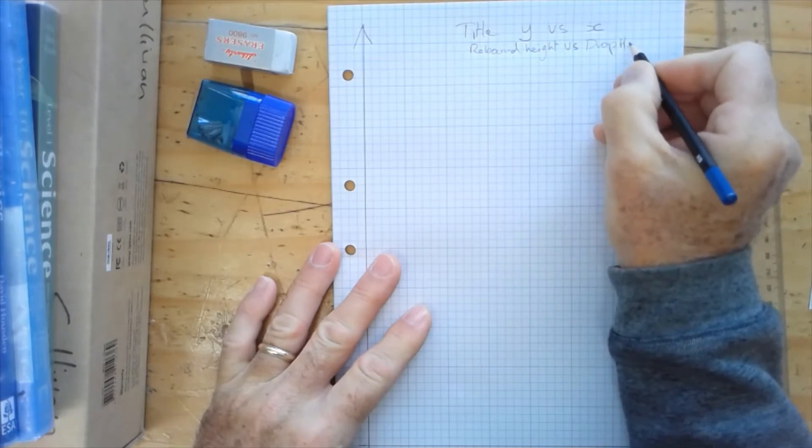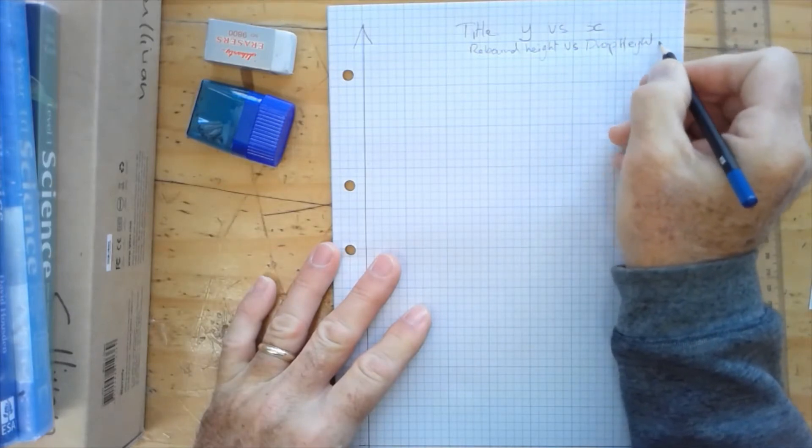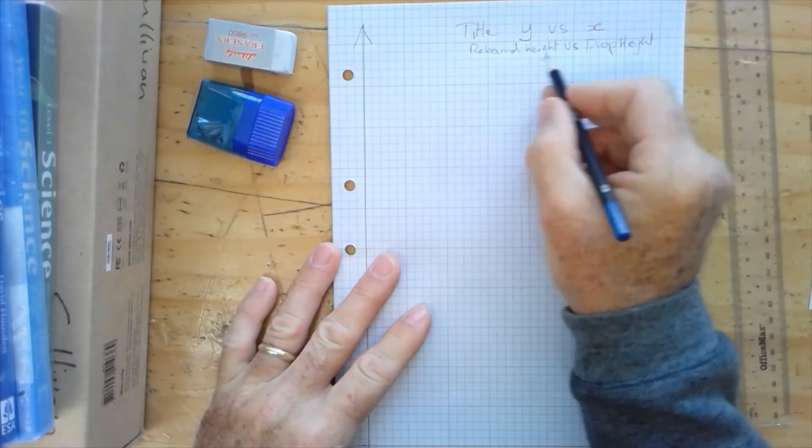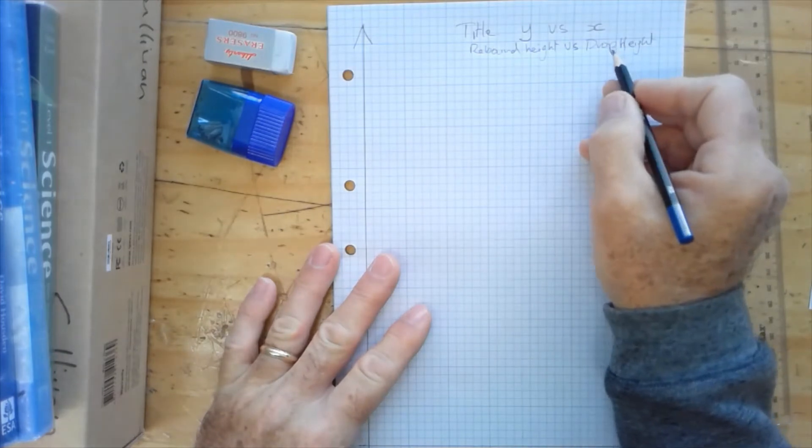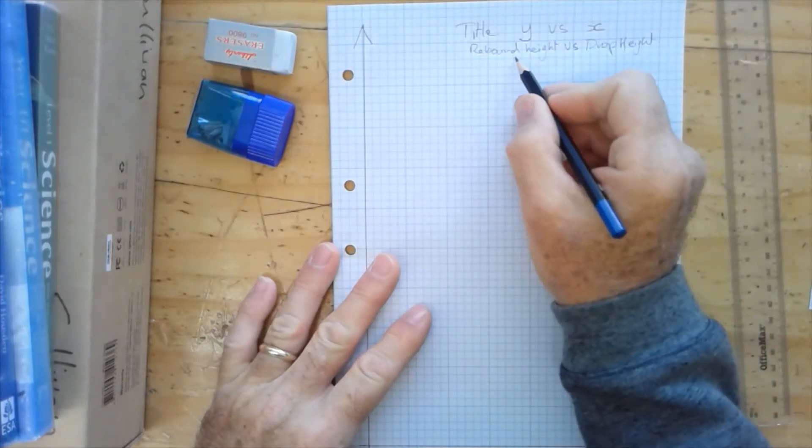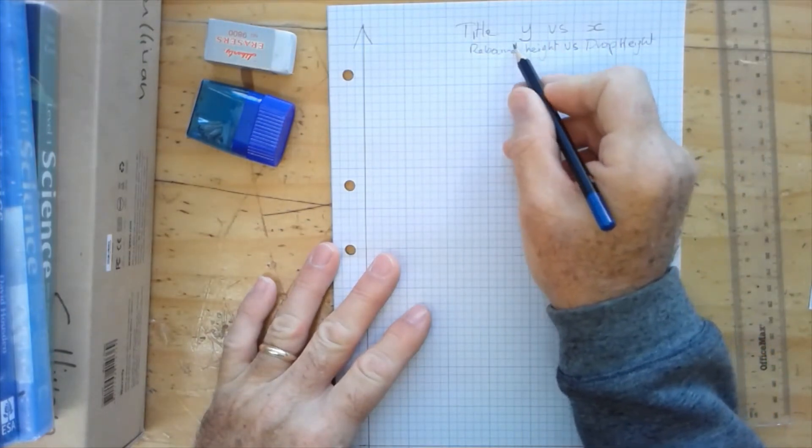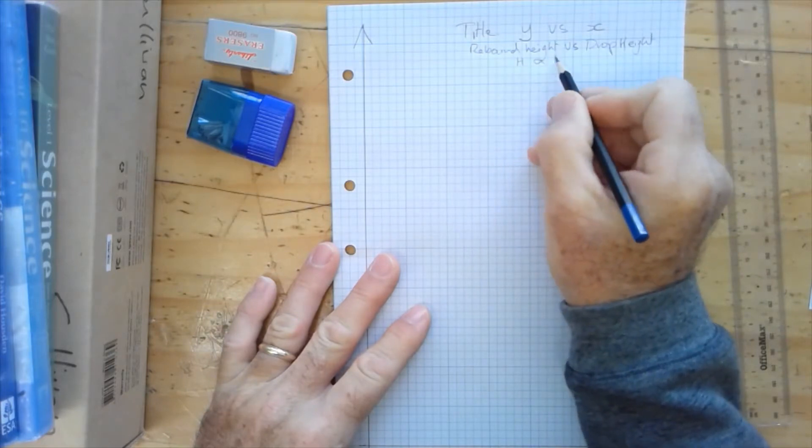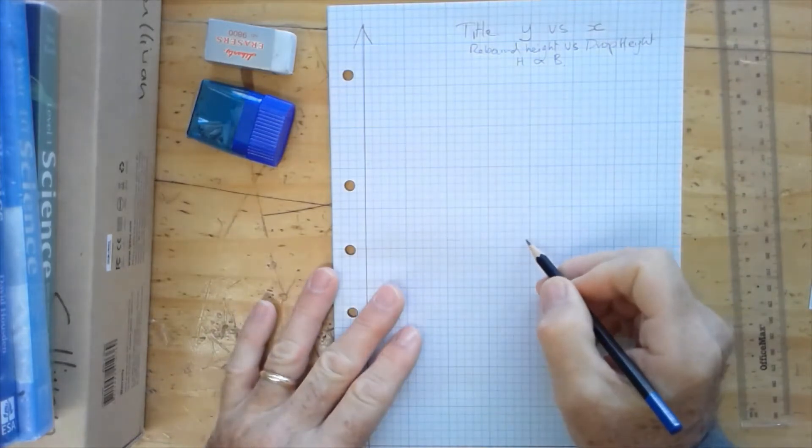And the reason for this is our graph is actually, what is the relationship between the rebound height and the drop height? We're looking for what is an equation which ties the rebound height, H, and our drop height, B. So we have a title.